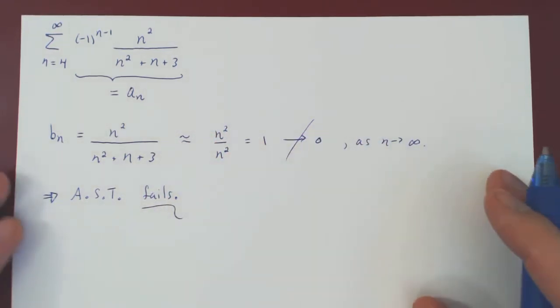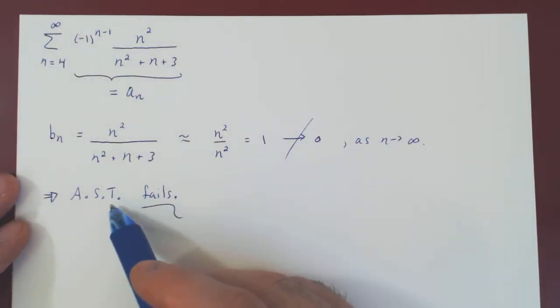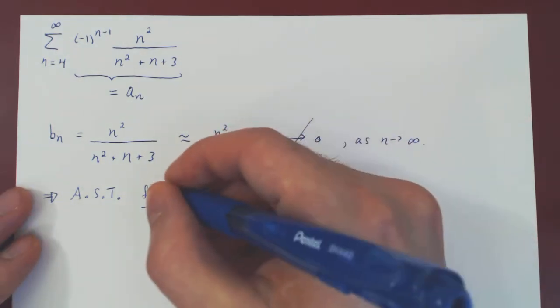And be careful here not to conclude that we have divergence by the alternating series test. The only possible conclusion of the alternating series test is, if bn is eventually decreasing, and converges to zero in the limit, the series converges. If either condition is not satisfied, the test simply fails, so it returns nothing.